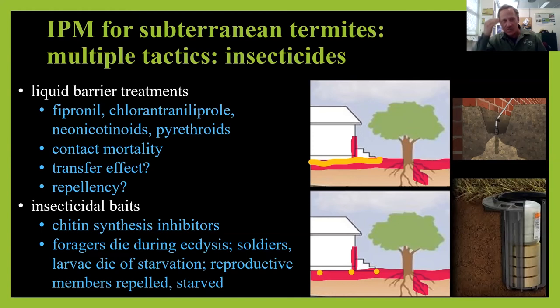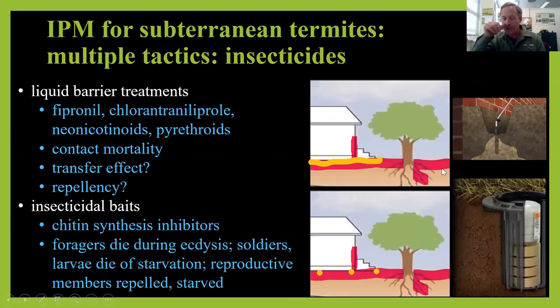Liquid barrier residues don't last forever — they do last a long time, five to ten years for the really effective ones — but the termite colony may still be present just outside the treated area and may reinvade in the future as residues break down.